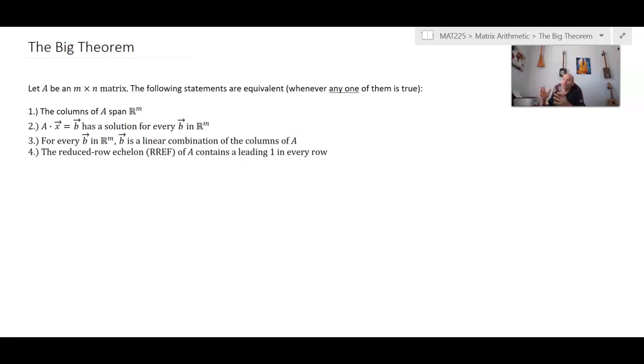So we're not going to give a formal proof for this, but we'll lay out the idea to see how all of these ideas that we've learned so far, these multiple representations, can lead us to see that these conclusions are the same. So let A be some m by n matrix. The following statements are equivalent. Now, these aren't always true, but as long as one of them is true, then they are all true.